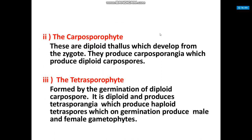The second thallus is the carposporophyte, which is diploid and develops from the zygote. It produces carposporangia which produce diploid carpospores. The third thallus is the tetrasporophyte, formed by the germination of the diploid carpospore. It is diploid and produces tetrasporangia which produce haploid tetraspores.